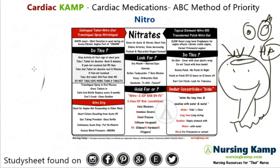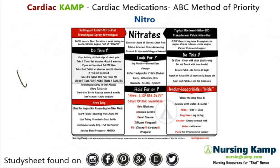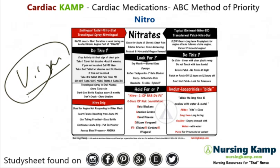We hold nitro for patients on beta blockers, severe anemia, renal disease, diltiazem, and verapamil. We also hold it for Viagra — because both nitrates and Viagra work on the nitric oxide pathway for erectile dysfunction, and combining them doubles the nitrate effect.